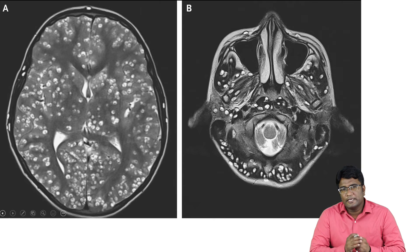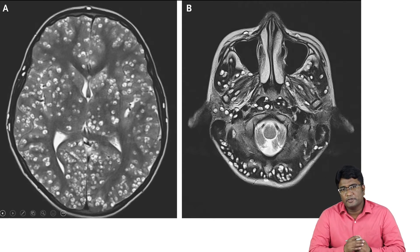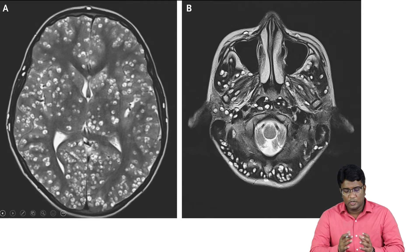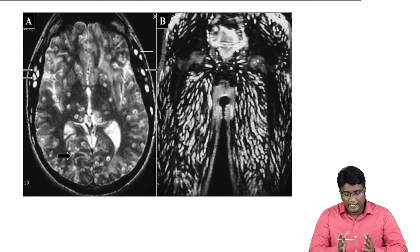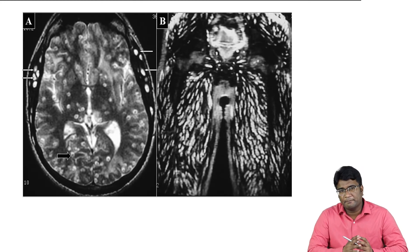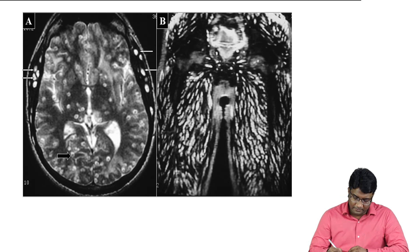Here is another good example of the vesicular stage of neurocysticercosis, showing multiple cysts with a central scolex. Please look at these MRI images — you can see neurocysticercosis involving the brain.